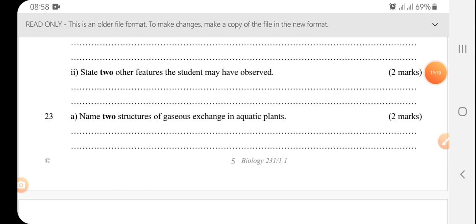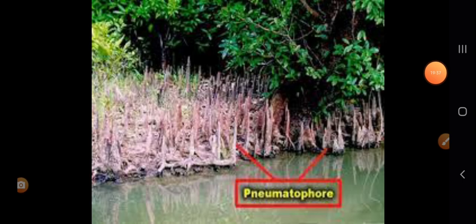Plants, name two structures of gaseous exchange in aquatic plants. So we have the pneumatophores, and in layman's language we call them the breathing roots. We have the cuticle and we have the aerenchyma tissues.